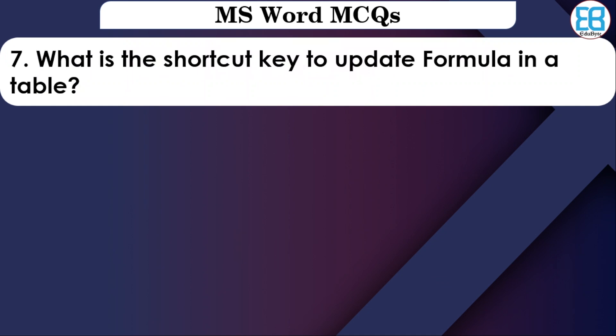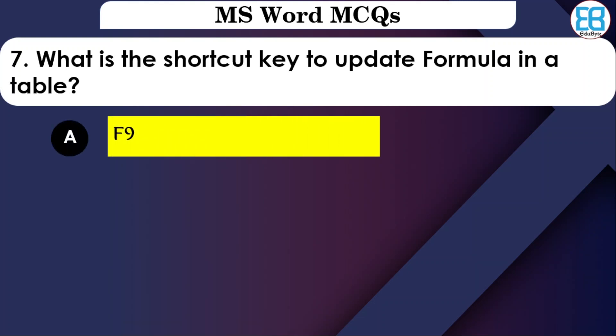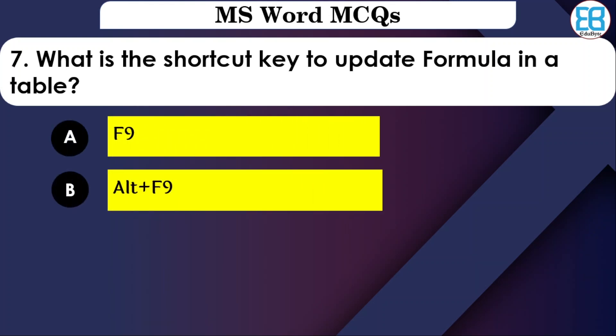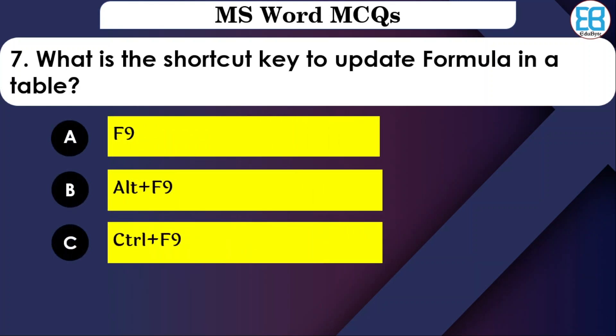What is the shortcut key to update a formula in a table? The options are: F9, Alt+F9, Ctrl+F9, or Shift+F9. The correct option is F9.